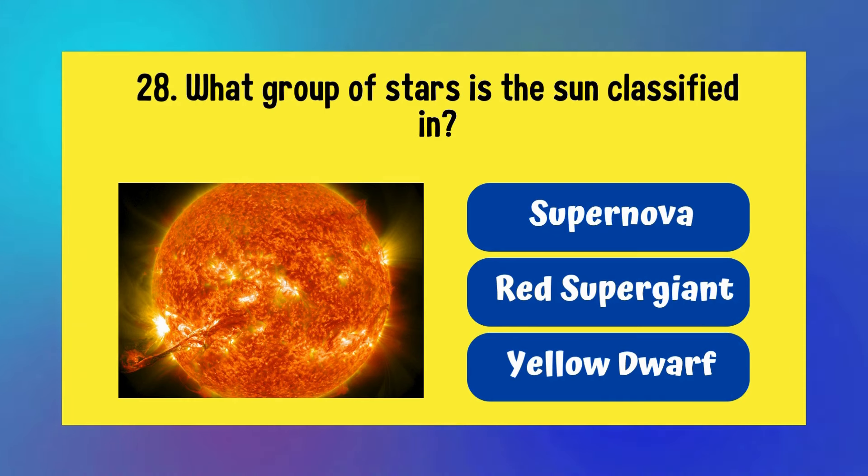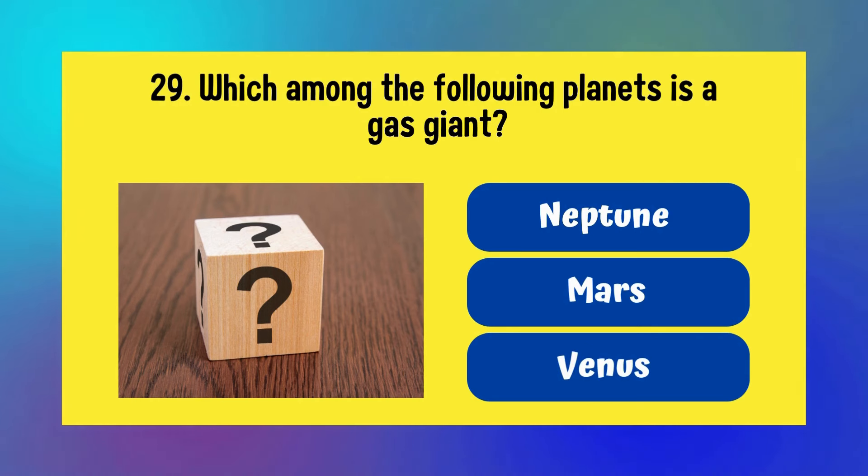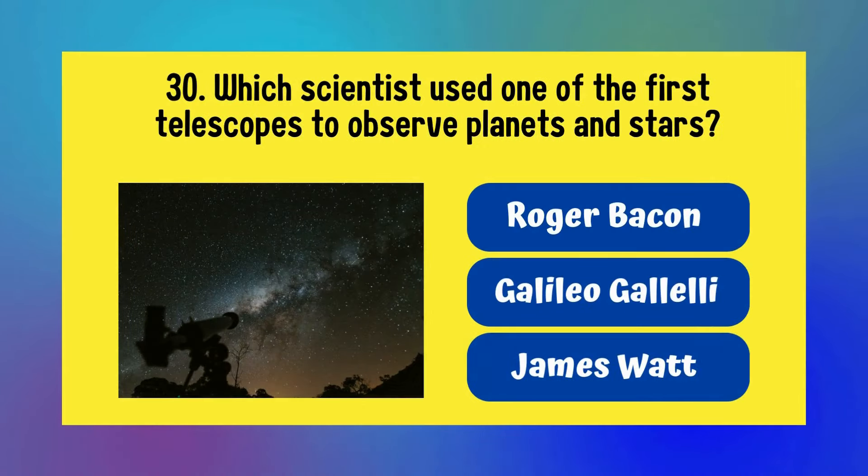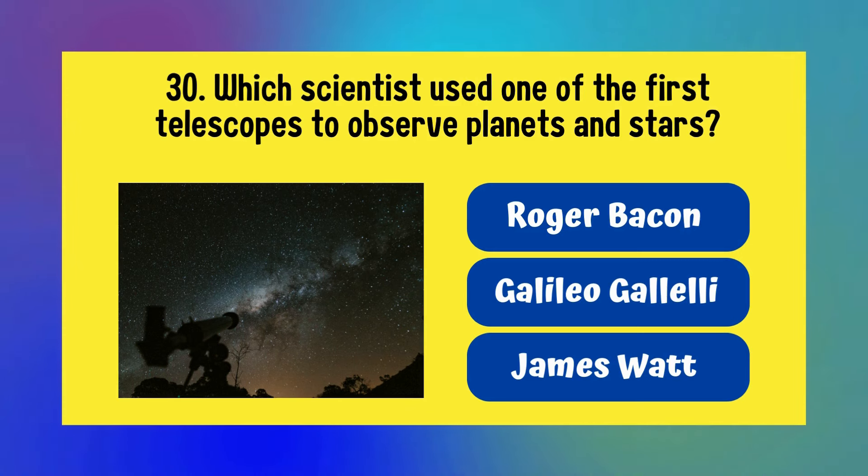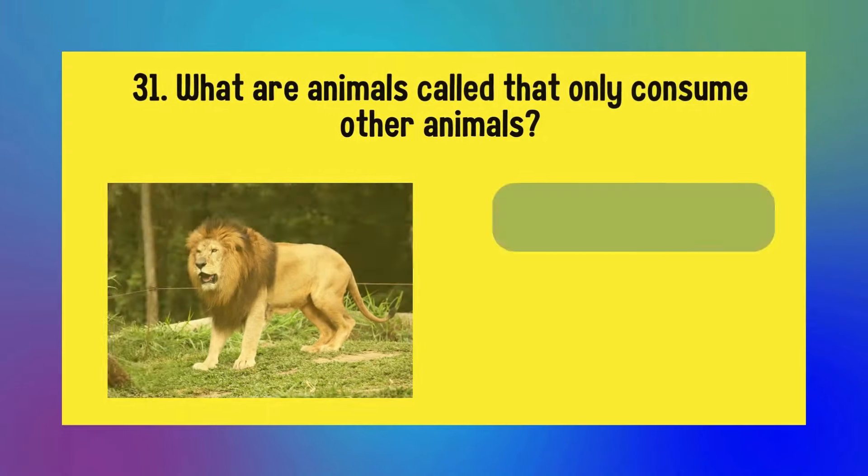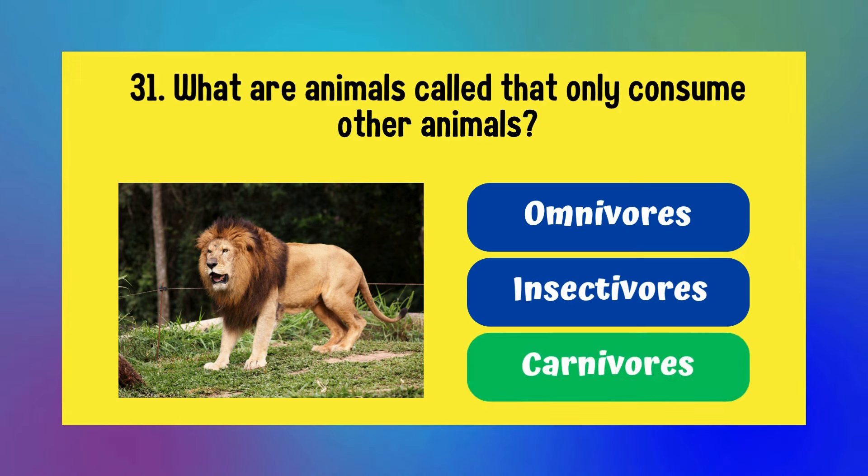What group of stars is the Sun classified in? Supernova, red supergiant, or yellow dwarf? Answer is yellow dwarf. Which among the following planets is a gas giant? Neptune, Mars, or Venus? Answer is Neptune. Which scientist used one of the first telescopes to observe planets and stars? Roger Bacon, Galileo Galilei, or James Watt? Answer is Galileo Galilei. What are animals called that only consume other animals? Omnivores, insectivores, or carnivores? Answer is carnivores.